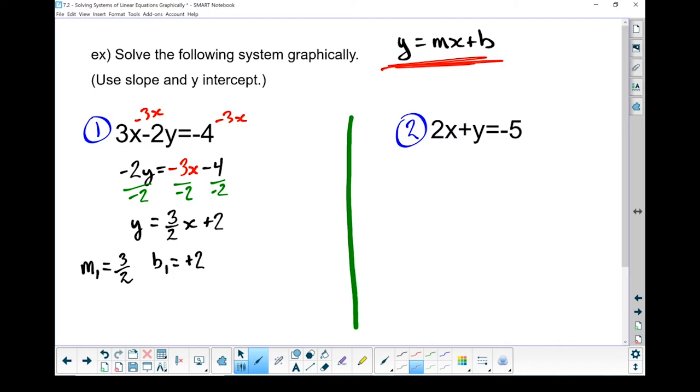I want to get y by itself, so I'm going to subtract 2x from both sides. And I've got y equals, I'm going to flip the order, minus 2x minus 5. Our slope of our second line is whatever is in front of the x. That's a minus 2. I'm going to treat it as a minus 2 over 1. And our y-intercept of our second line is minus 5. Let's go put that on the graph.